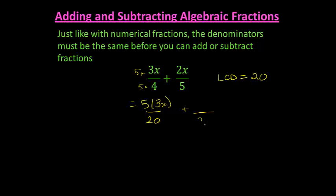Same thing for my second fraction. I want a common denominator of 20, so in order to get that, I need to multiply both the numerator and denominator by 4. So I've got 4 times 2x.